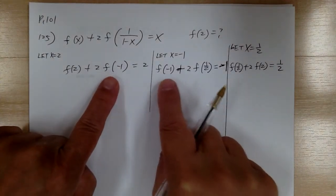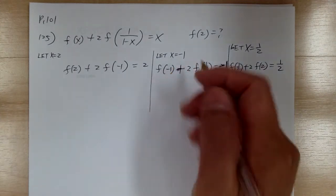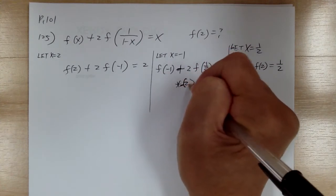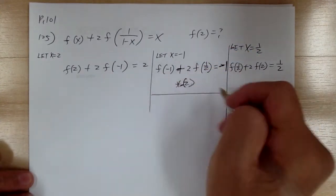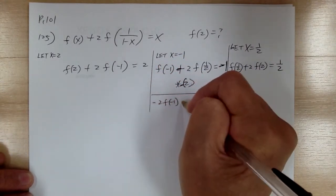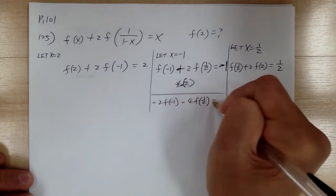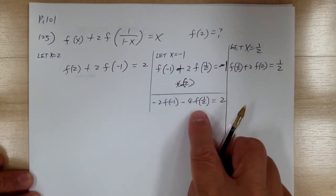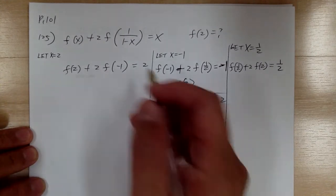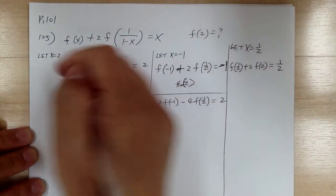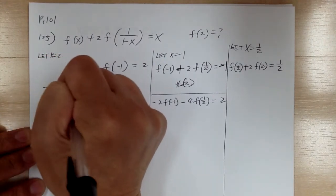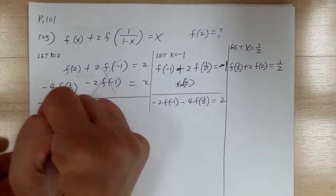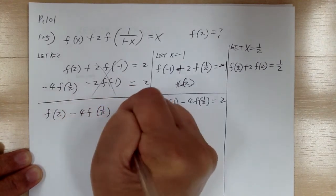I'm going to multiply the second equation by negative 2 to eliminate f of negative 1. Multiplying by negative 2 gives: negative 2 f of negative 1 minus 4 f of one half equal to positive 2. Using the elimination method — lining this under the first equation — when we add, the f of negative 1 terms cancel, giving f of 2 minus 4 f of one half equal to 4.